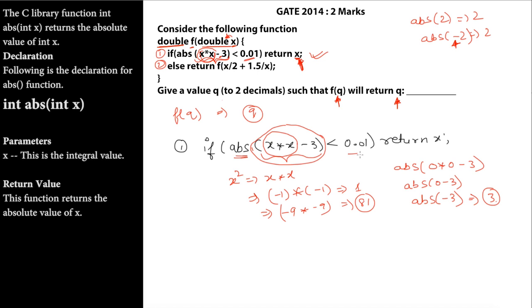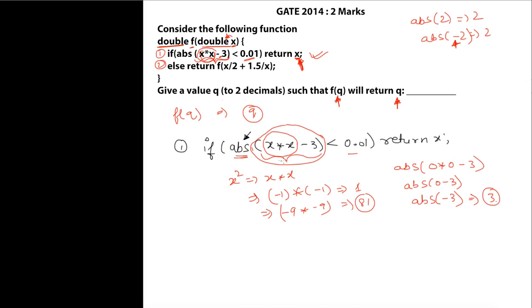We need to choose X such that the complete expression evaluates to less than 0.01. We cannot make the expression negative because the ABS function will make it positive. Therefore, we must make X * X equal to 3, because then 3 - 3 = 0, and ABS(0) = 0, which is less than 0.01. However, 3 is not a perfect square.